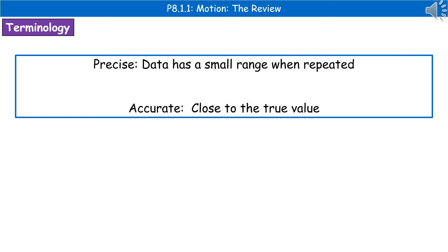The last thing to consider here are two terms used with regards to data: precise and accurate — they don't mean the same thing. Precise data has a small range when repeated, whereas accurate data is data that is close to the true value. Make sure you remember the difference between precise and accurate.